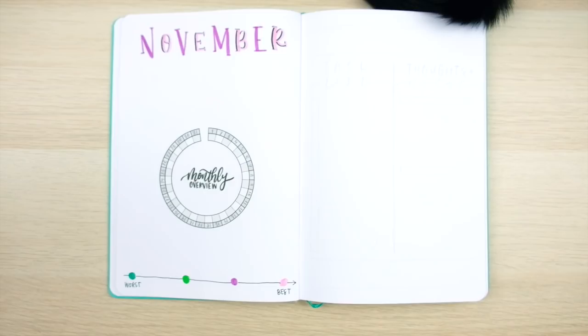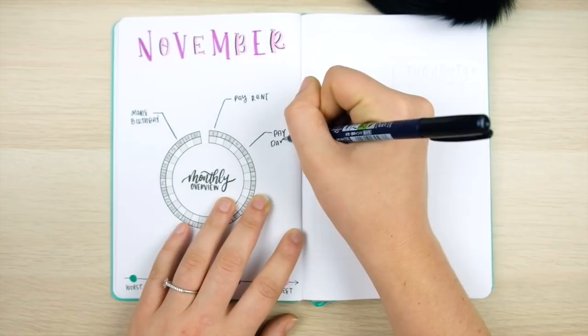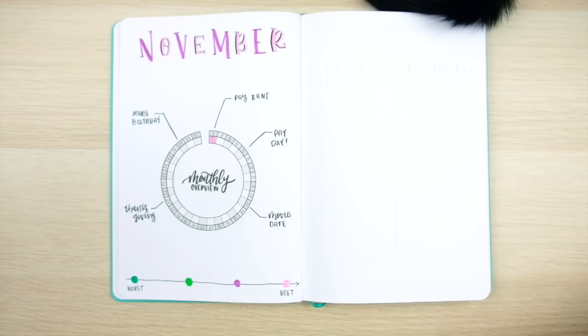Circular monthly logs are also really cool because you can easily make them into a tracker. For example here I'm making the circular log into a mood tracker as well with a simple color code at the bottom of the spread so that way you can just fill in the blank box with your mood color for each day.